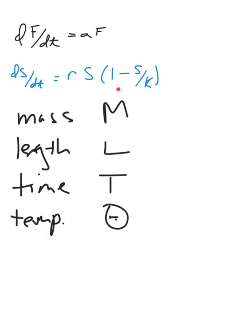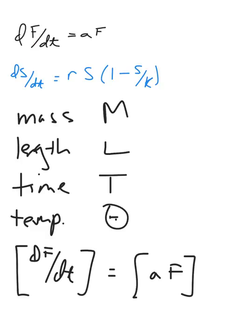or negative rs squared over k—for two things to be equal to each other, they need to have the same dimension. I can write this as the dimension of df/dt is equal to the dimension of af.